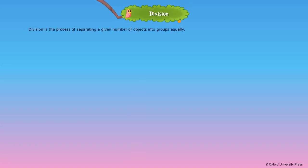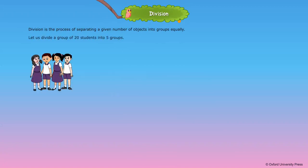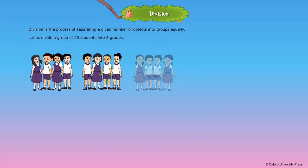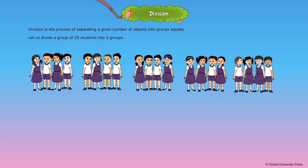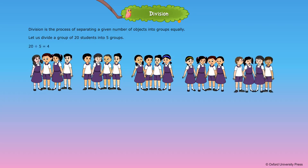Division is the process of separating a given number of objects into groups equally. Let us divide a group of 20 students into 5 groups. 20 divided by 5 is equal to 4. Quotient is equal to 4.